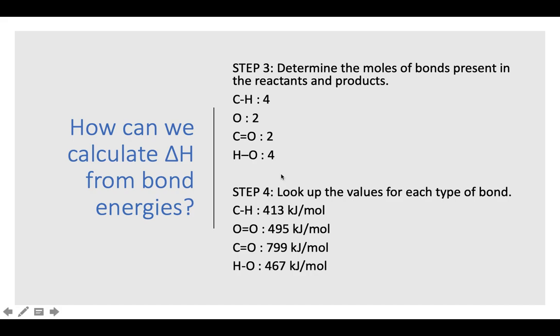And so again, I just looked at those Lewis dot structures and looked at my coefficients and figured out how many of each type of bond I had. I have four carbon to hydrogen bonds because of that methane molecule. I'm going to have two oxygen to oxygen double bonds. I have two oxygen to carbon double bonds and then four total oxygen to hydrogen single bonds because each water has two of those and there are two waters.